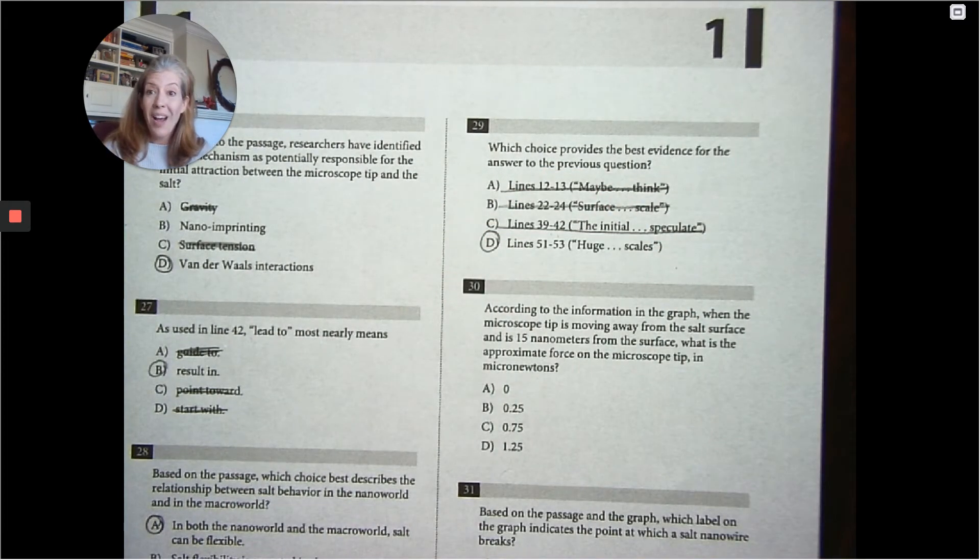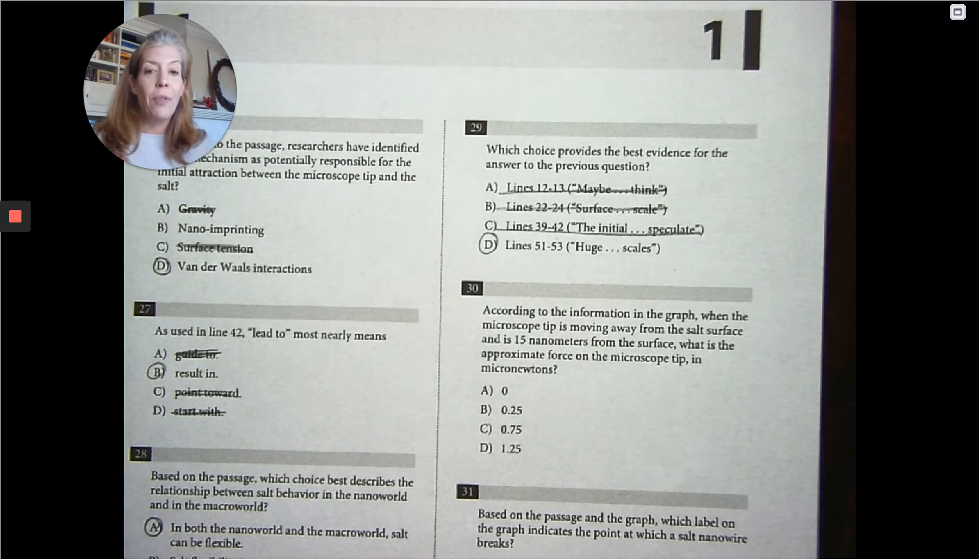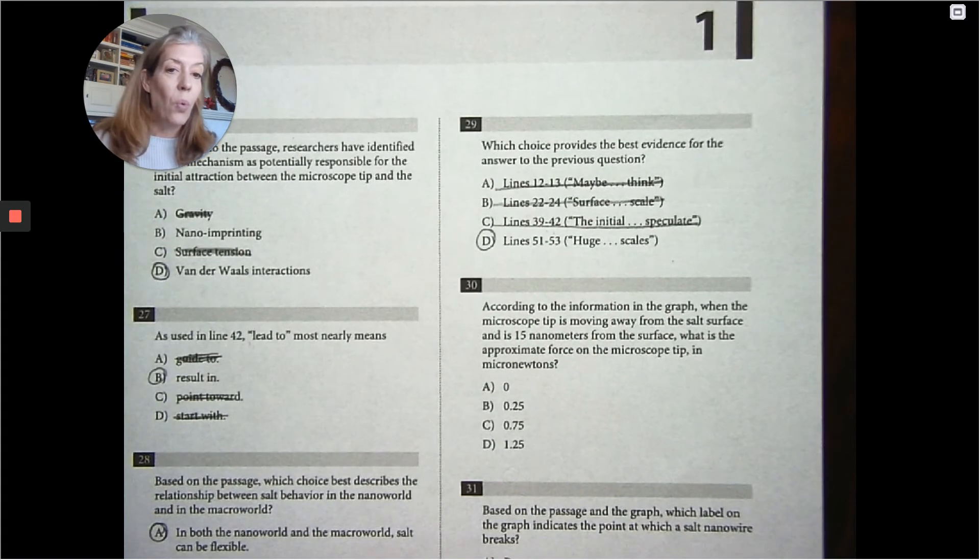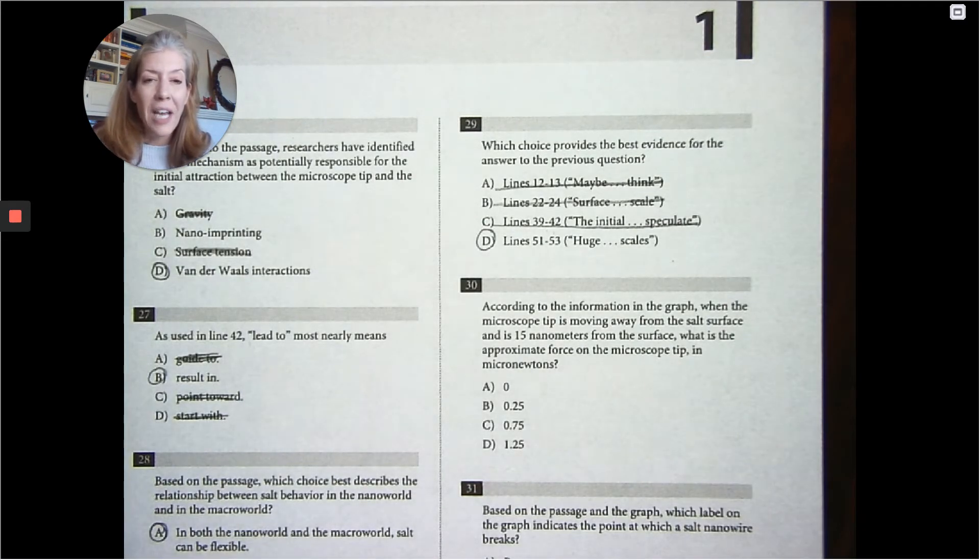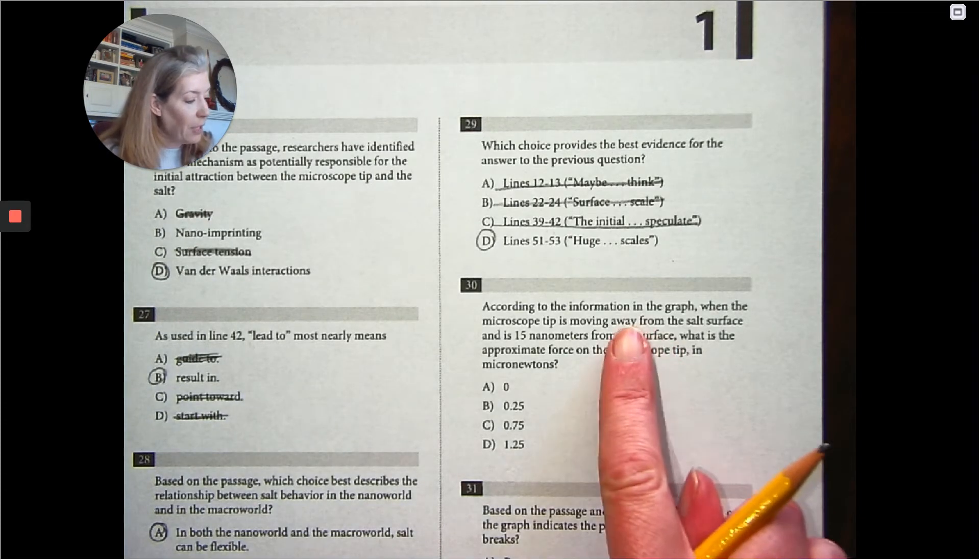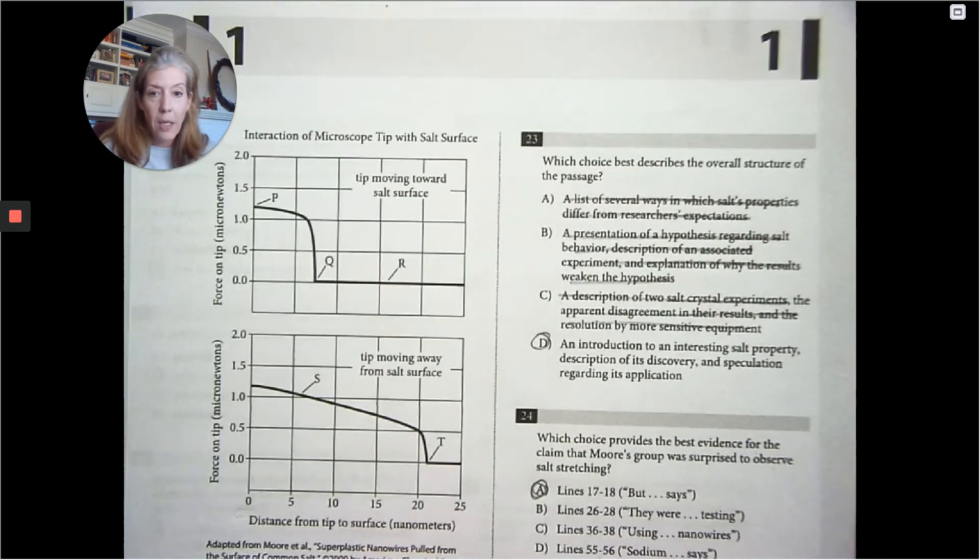Now we're on the graph. We're already on the graph. According to information in the graph, when the microscope tip is moving away from the salt surface, I think I underlined something like this. But let's read all of it. And 15 nanometers from the surface. What is the approximate force on the microscope tip in micronewtons? So okay. We're looking in here.